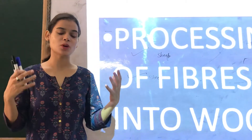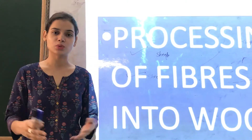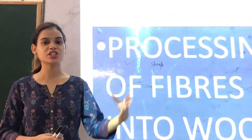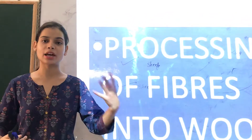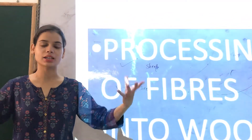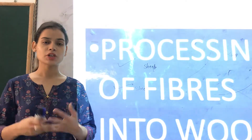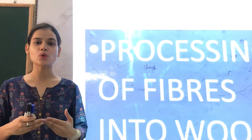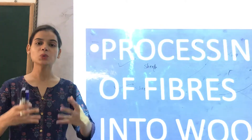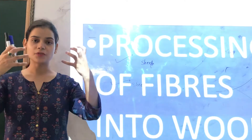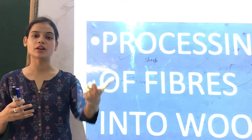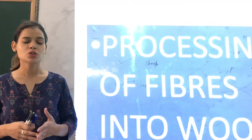We have already understood from where we get wool. There are many animals like sheep, goats, rabbits, alpaca, llamas, yak, and camel that provide us wool. In today's class we are going to understand how we get the fabric out of the hair that we get from the sheep.